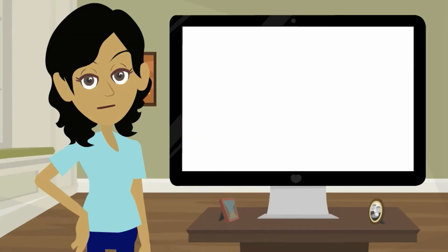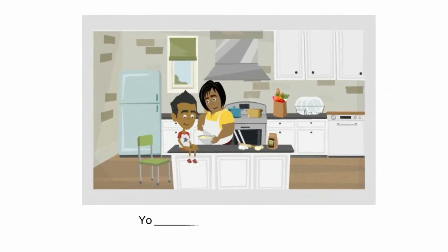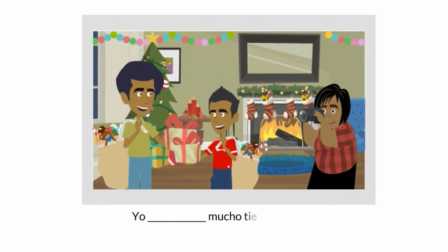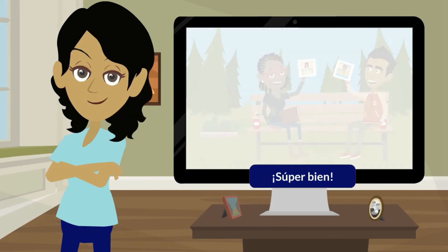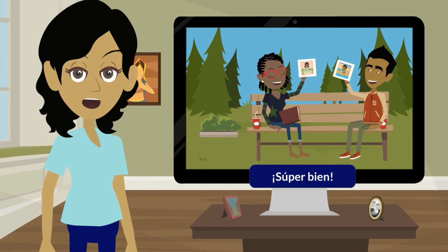Time to practice. For every image you see, write what Oscar or Victoria would say in your graphic organizer. Yo cocinaba con mi abuelita. Mis abuelos vivían lejos. Yo pasaba mucho tiempo con mi familia. Súper bien. If that was challenging for you, remember, there is more practice in your Explorer course.